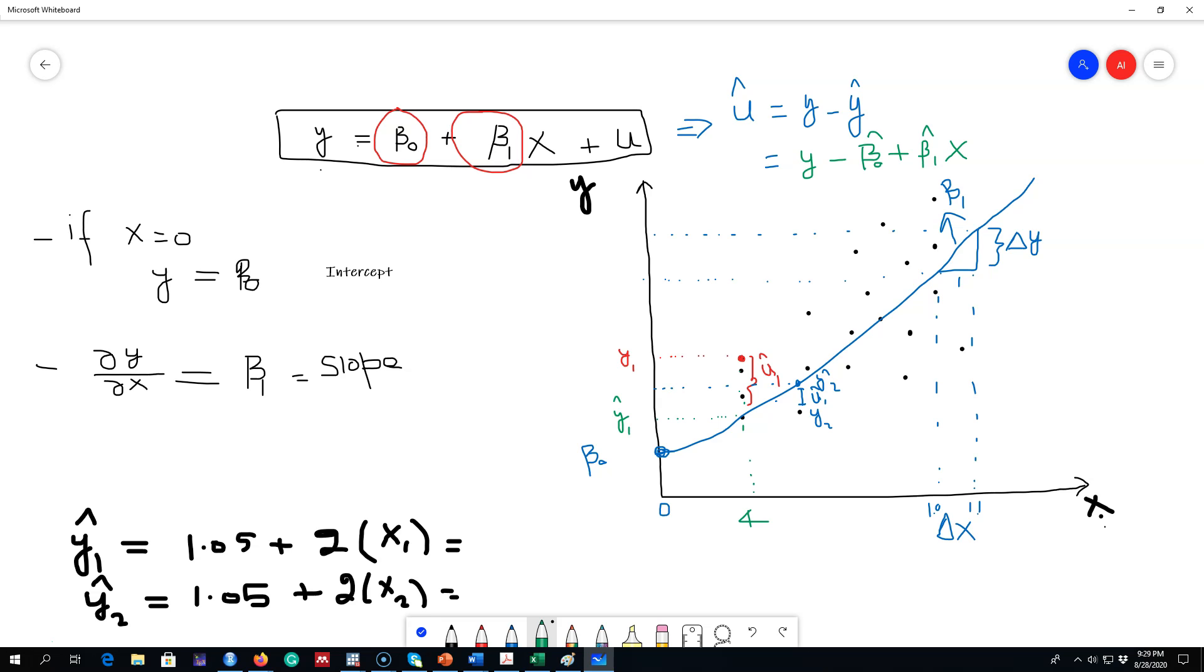Now we have to check the properties of this u hat. We need to test for the residual properties that we talked about in our previous chapter. We can look at the ACF, we can test for the Ljung-Box test, which in this case will be the Breusch-Godfrey test. We'll talk about those properties in the future, but essentially we're going to test the properties of this regression residual.